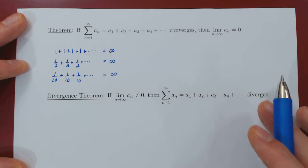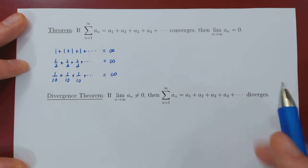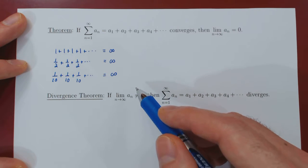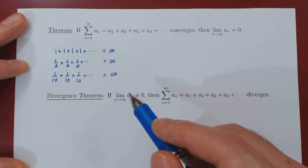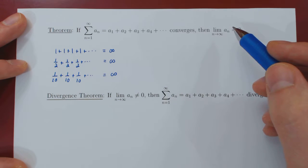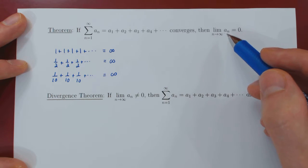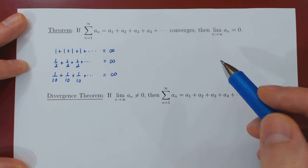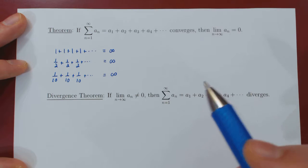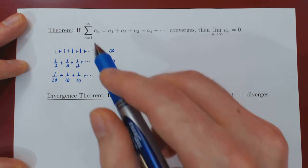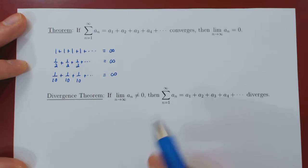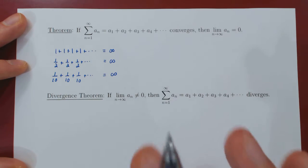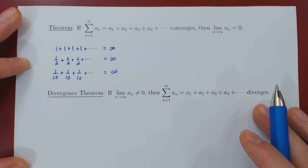Now, a word of caution: what if the terms we're summing over do shrink to 0? Is it enough to guarantee convergence? And the answer is no.